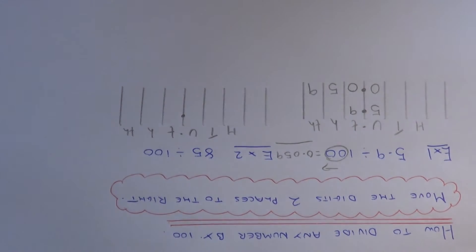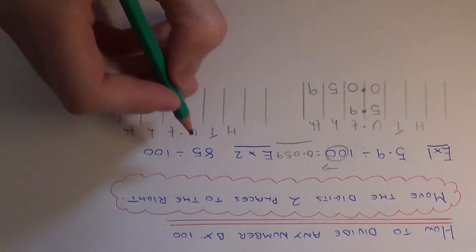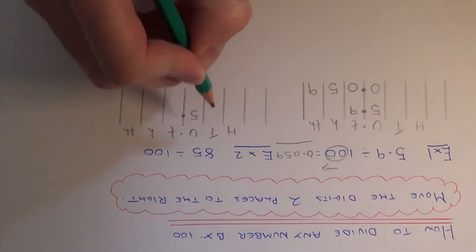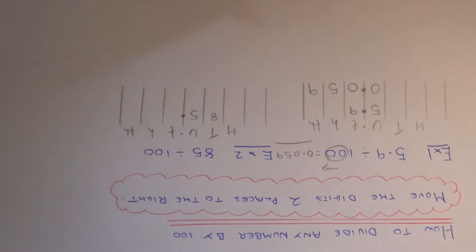Let's have a look at example 2. This time we've got 85 divided by 100, a whole number. We've put the numbers in the correct columns: 8 tens and 5 units.